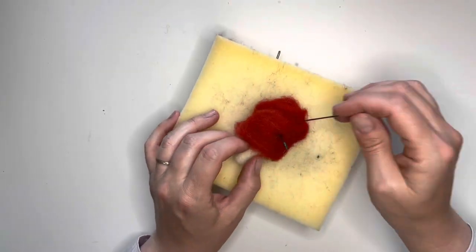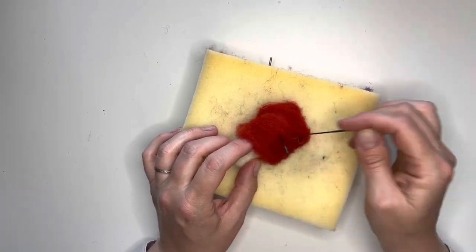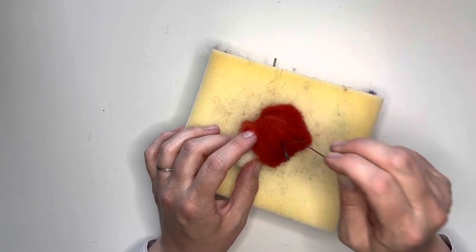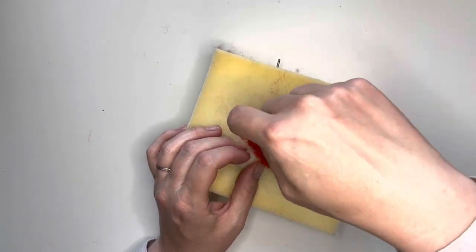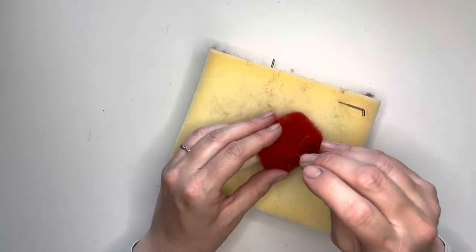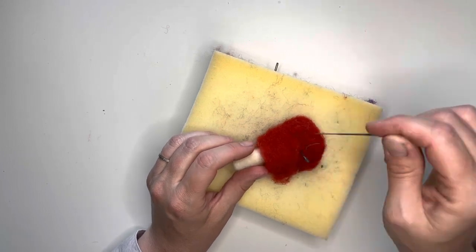We're going to put one needle in to hold it, and we're going to poke with the other needle. So you just want to do little tiny pokes all over, getting it to hold together. And the more that you poke, the tighter it gets. Every once in a while, just turn that around there, and poke on the other side.